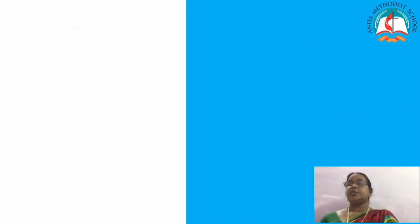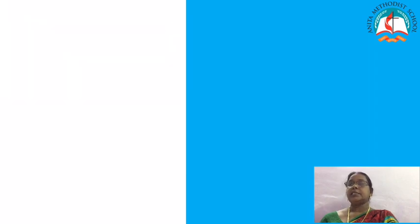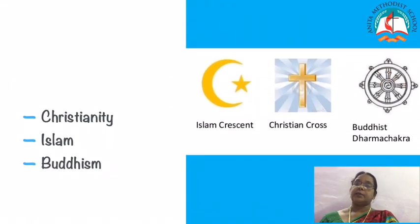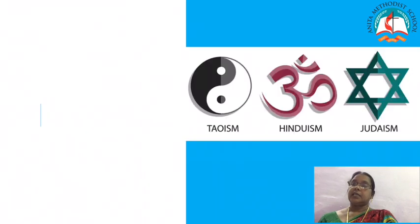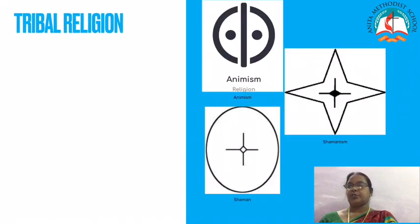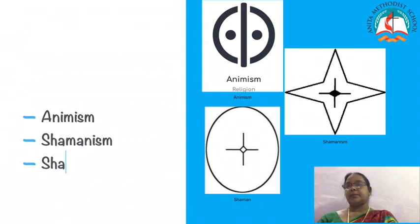We already learned the classification of religion. The first one is universalizing religion — that is Christianity, Islam, and Buddhism. The second type is ethnic religions, such as Judaism, Hinduism, and Japanese religions. The third type is tribal religions — Animism, Shamanism, and Shaman.